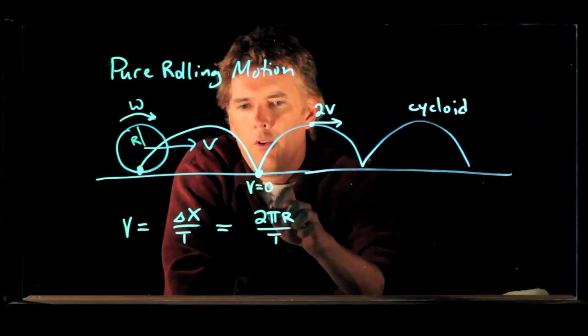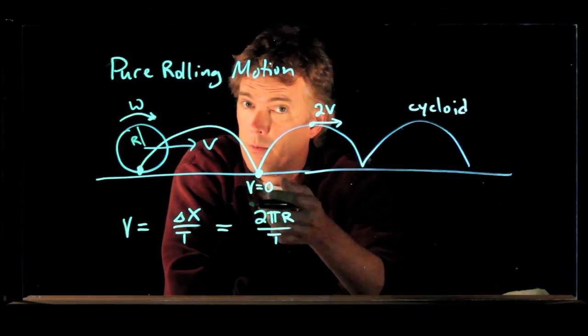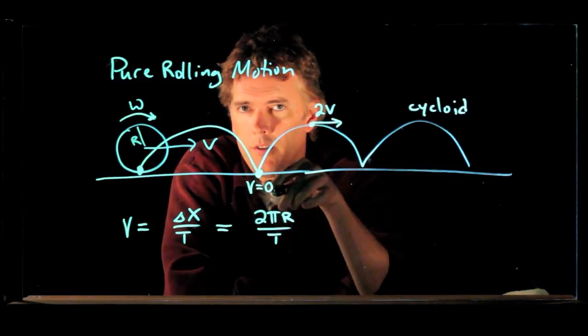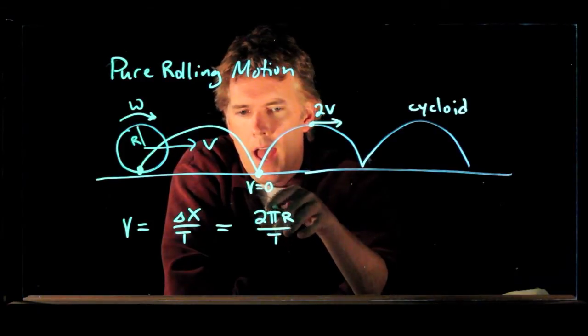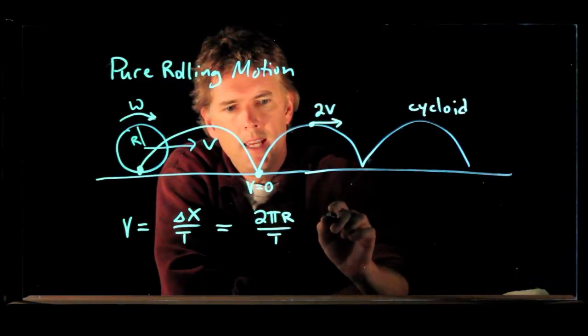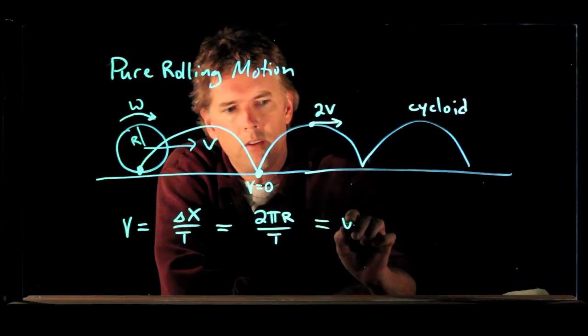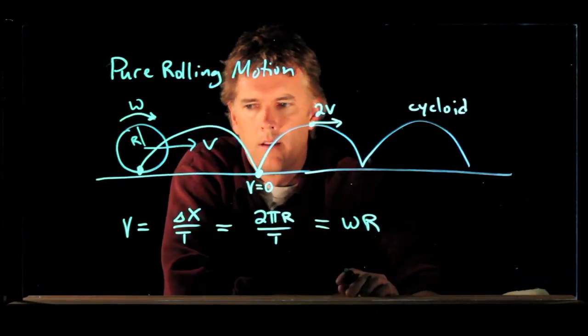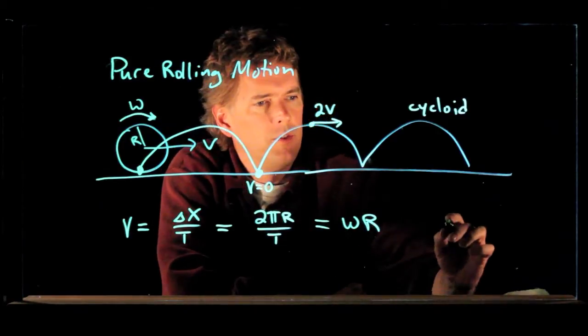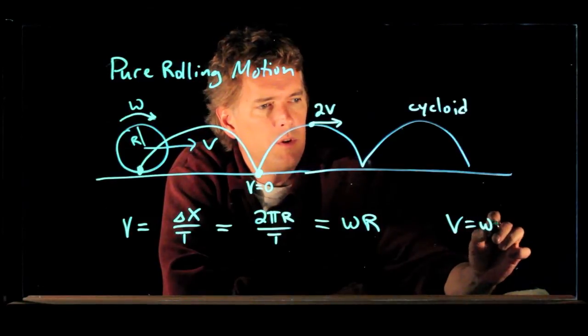It looks like we have 2π, which is radians, divided by t, which is seconds. And 2π over t is, in fact, omega. So we're back to our old relationship, v equals omega r.